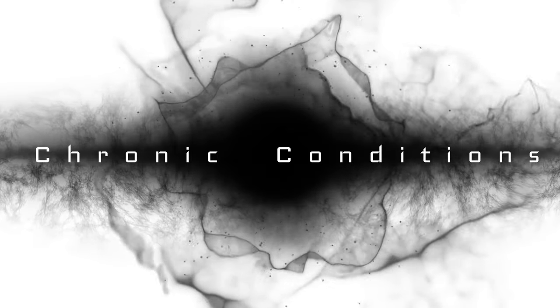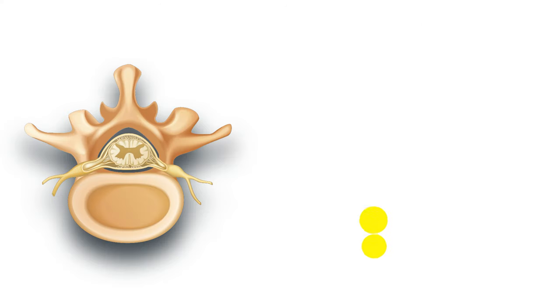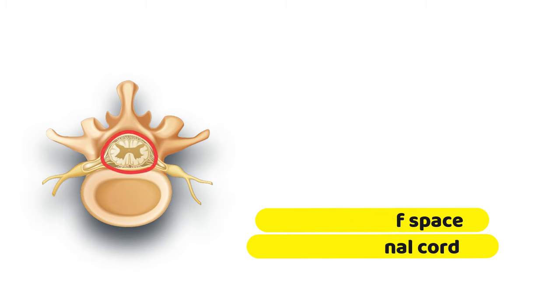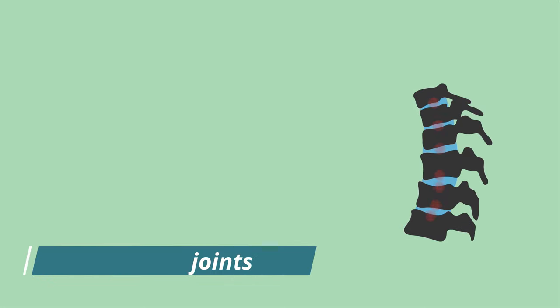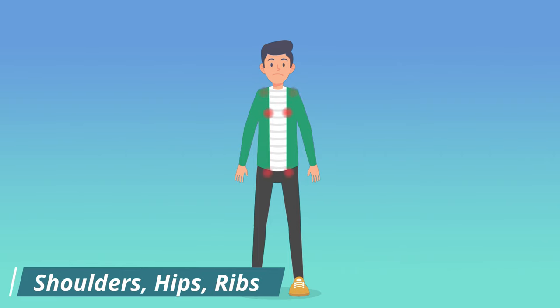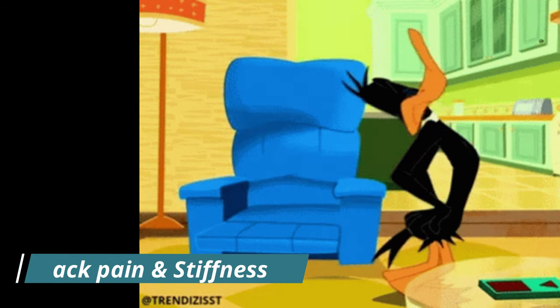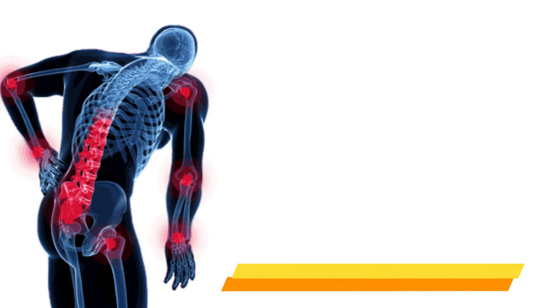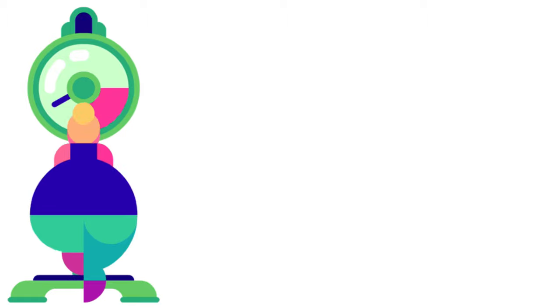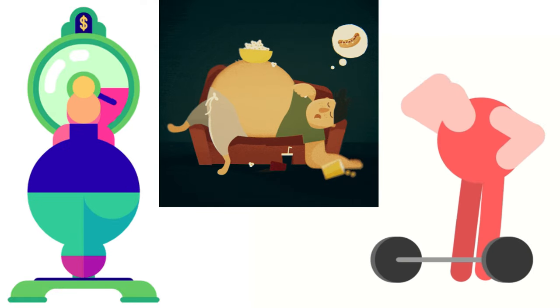There are several chronic conditions that may cause back pain. First is spinal stenosis, a narrowing of the space around the spinal cord, which can put pressure on the spinal nerves and lead to back pain. Second is ankylosing spondylitis, which inflames the joints of the spine and sometimes the shoulders, hips, ribs and other areas. It causes chronic back pain and stiffness, and in serious cases spinal vertebrae start to fuse together. Third is fibromyalgia, which causes widespread muscle aches including back pain. Other reasons your lower back may hurt include being overweight, being sedentary and lifting heavy stuff on the job.